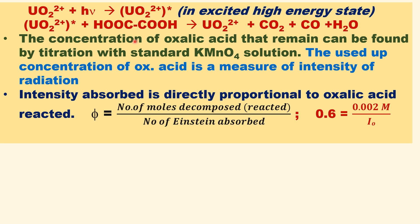The reaction gives back the uranyl ion in the ground state. The oxalic acid is consumed. The concentration of oxalic acid that remains can be determined by titrating against standard potassium permanganate solution. The amount of oxalic acid used up is a measure of the intensity of light radiation.